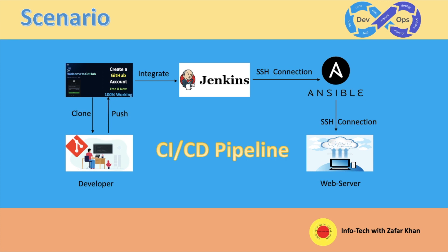In the dev server, developers write source code, then commit and push into GitHub. Jenkins then checks the repository and pulls the newly changed code at regular intervals, then builds the code and copies it to Ansible. Finally, Ansible deploys it to the web server. The web server is the final destination.